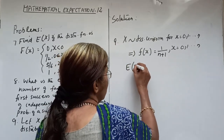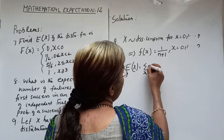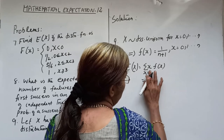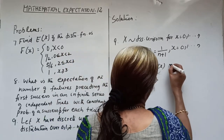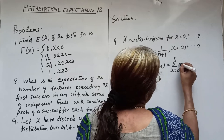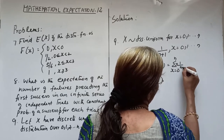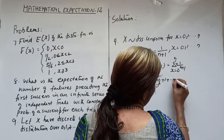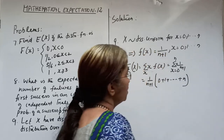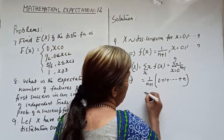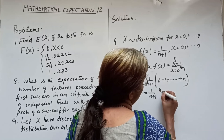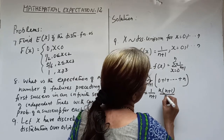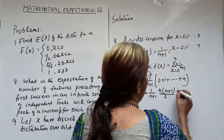Expectation of X = Σ X · f(X) = (1/(N+1)) · (0 + 1 + 2 + ... + N) = (1/(N+1)) · N(N+1)/2 = N/2.